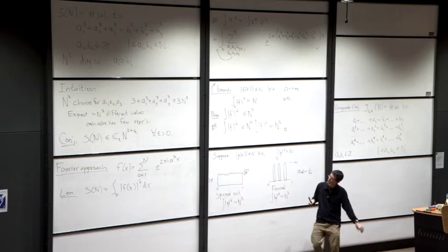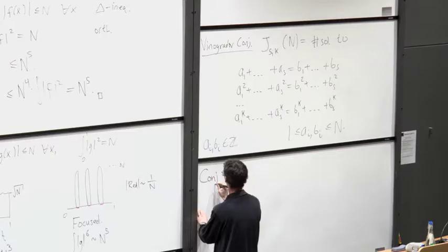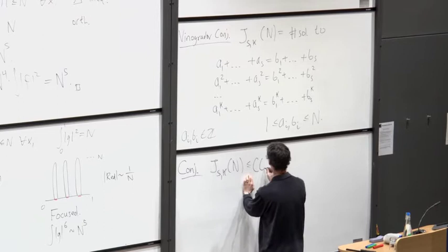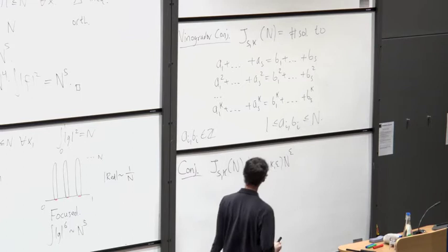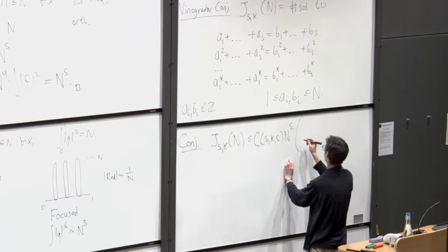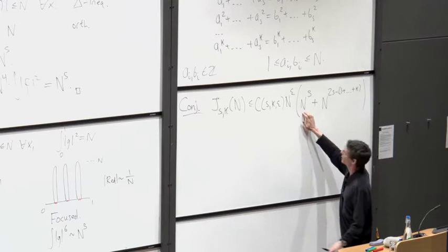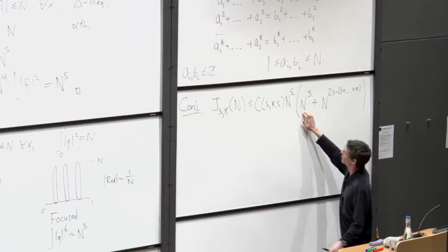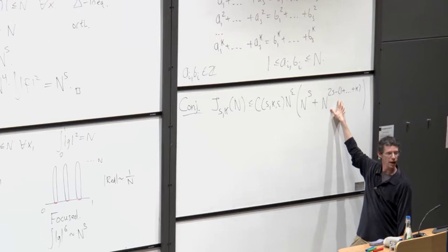By the same reasoning we used for S(n), the natural conjecture is that J_{s,k}(n) is at most C_{s,k,ε} · n^ε · (n^s + n^(2s − k(k+1)/2)). The n^s term counts diagonal solutions — setting aᵢ = bᵢ for all i, which gives n^s choices. The second term is a reasonable guess for the number of non-diagonal solutions from the same kind of heuristic reasoning.